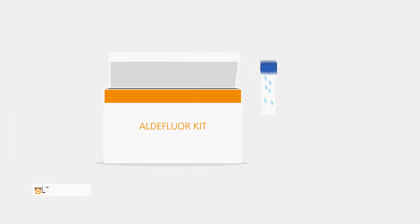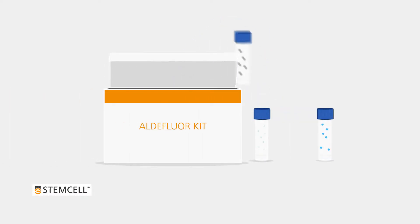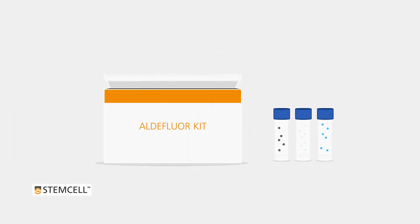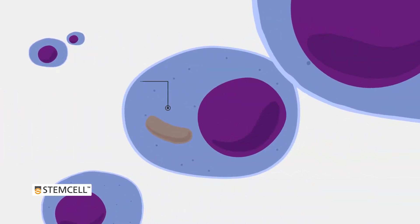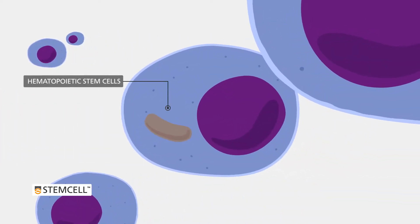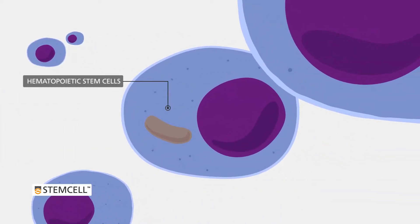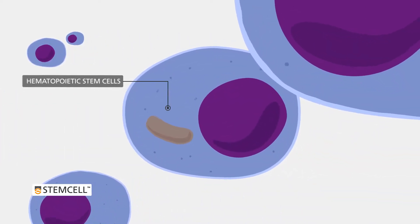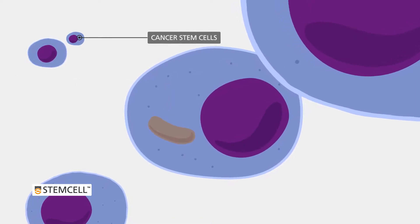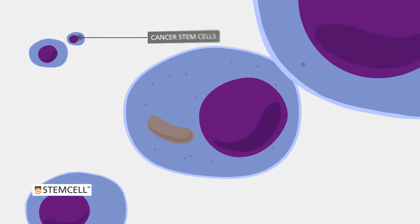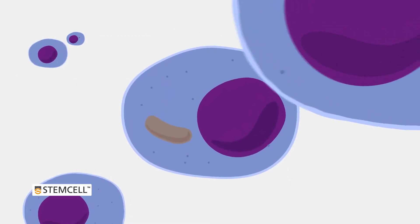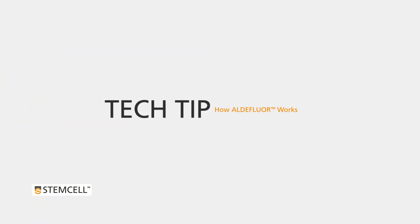Aldiflor can be used to detect populations of cells with increased ALDH expression. Increased ALDH has been reported in hematopoietic stem and progenitor cells and many cancer stem cells, including breast cancer. This video will show you how the Aldiflor assay works.